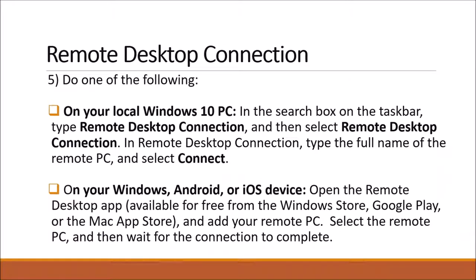On your local Windows 10 PC, in the search box type 'Remote Desktop Connection.' The application will come up, then type in the full name of the PC you want to connect to and select Connect. On your Windows, iOS, or Android device, you can also download that application — it's free and available in the Microsoft Store, Google Play, or the Mac App Store. Add your remote PC, wait for the connection to complete, and you'll be able to access your desktop computer from anywhere over the internet.